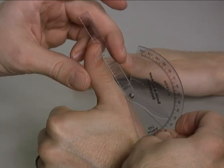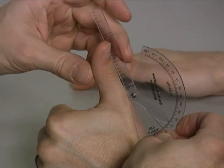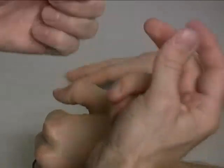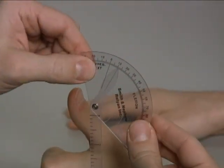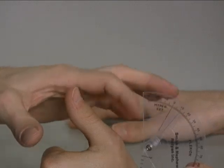We have about minus 10 degrees of extension at the MP joint.